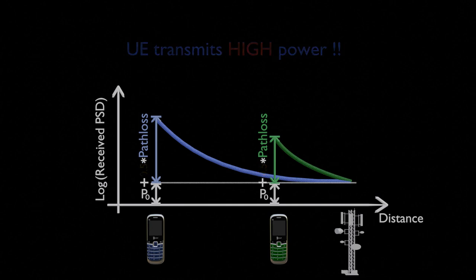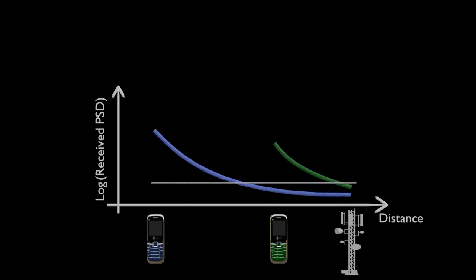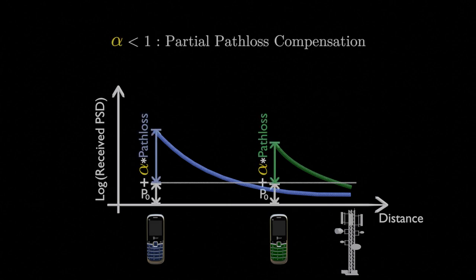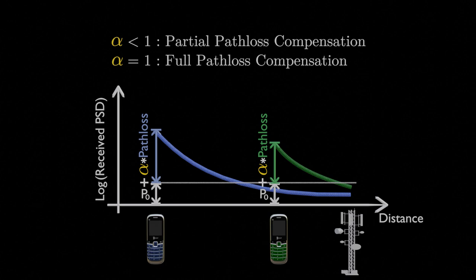For example, if alpha is set to 0.5, a faraway UE will lower its power much more than the nearby UE. In other words, if alpha is less than 1, we're only partially compensating for the path loss. This is known as partial path loss compensation, or fractional power control. On the flip side, if alpha is equal to 1, it means we're fully compensating for the path loss.